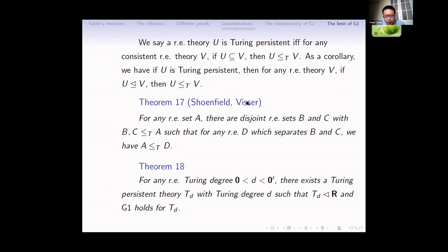The lesson is based on Shoenfield but essentially improves his original theorem: for any RE theory A, there exist disjoint RE sets B,C reducible in A, such that for any RE theory D, if D separates B and C — meaning D includes B and D's intersection with C is empty — then D computes A. From this theorem and the Shoenfield theorem, we can show that for any Turing degree between zero and the zero-jump, there is a Turing-persistent theory DT with that Turing degree, such that DT is weaker than R and G1 holds for DT.